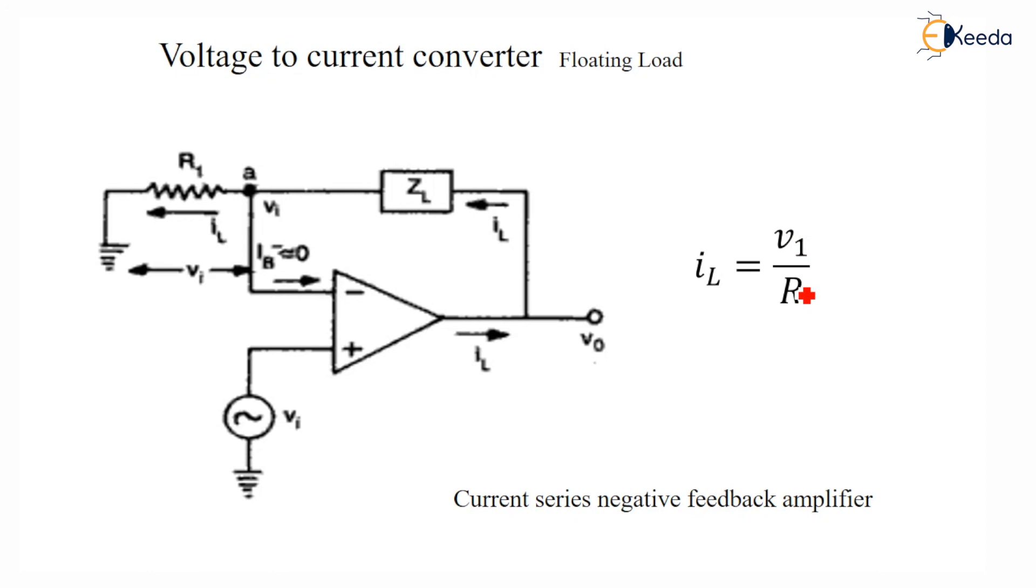This typical application of this voltage to current converter is as a DC and AC voltmeter, LED, Zener diode tester.